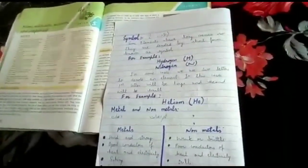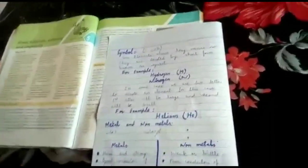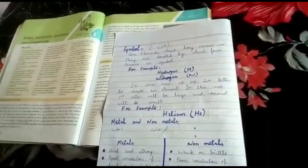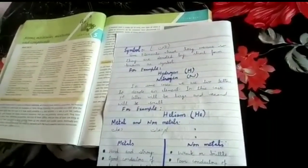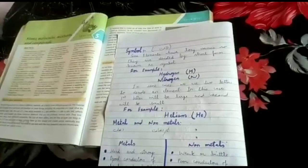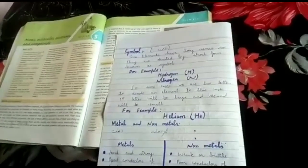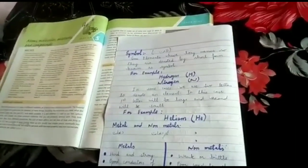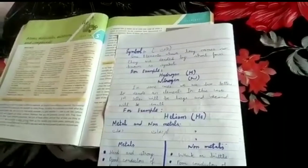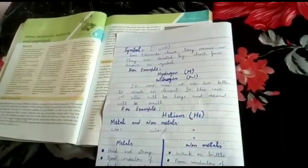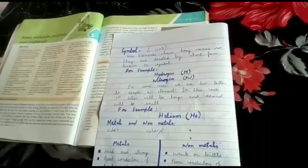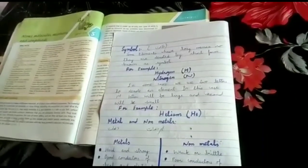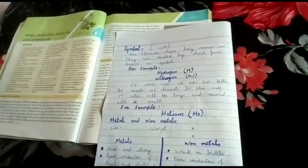Some elements have long names which are large and can create problems in writing, so scientists have produced a short way which we use symbolically to denote the element. For example, hydrogen - we take the first capital letter and denote it as H.